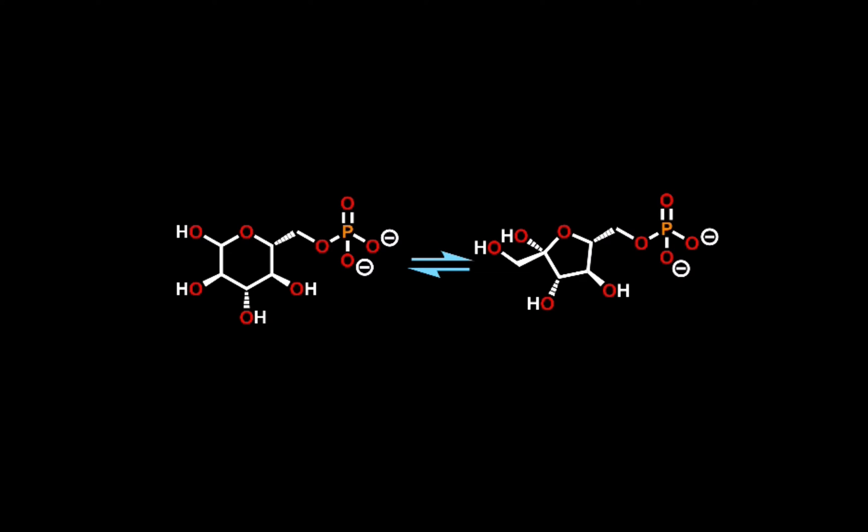Before we examine the active site of PGI in detail, we need to look at the reaction mechanism. This isomerization reaction actually looks a little extreme. How on earth are we going from a 6-membered ring to a 5-membered ring? Well, the reaction doesn't actually occur on the closed form of the sugar. First, the enzyme opens the ring.